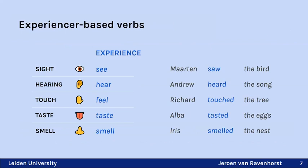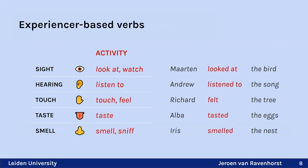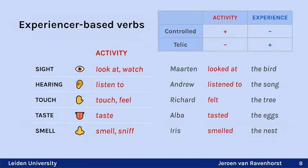Beyond experiences, we also have activities such as 'to look,' 'to watch,' 'to listen,' 'to touch,' 'to taste,' 'to smell,' and 'to sniff.' Activities differ from experiences in that they are controlled and atelic, while experiences are not controlled and are telic — meaning they have an endpoint.